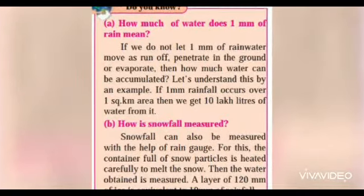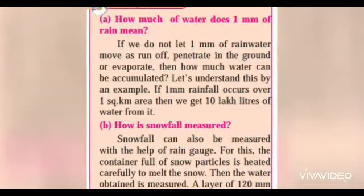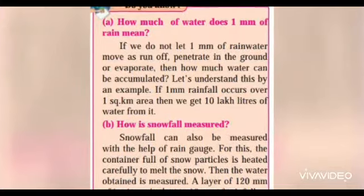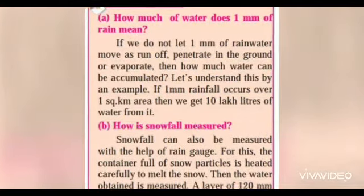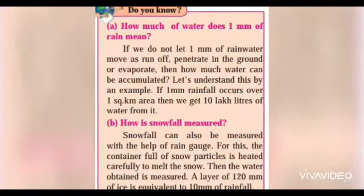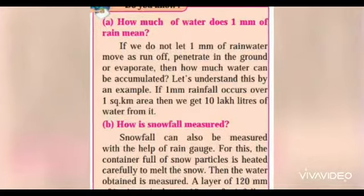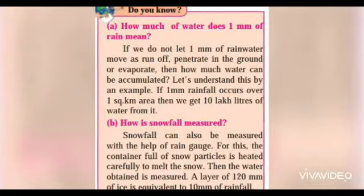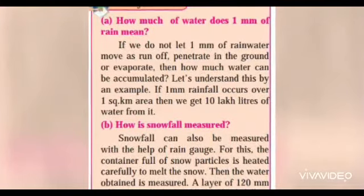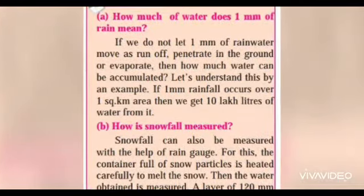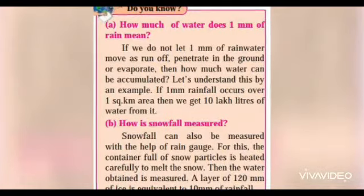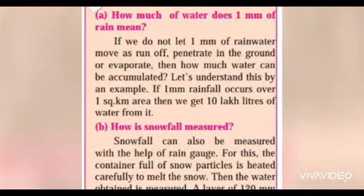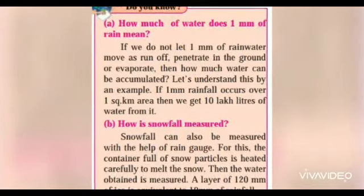How is snowfall measured? Snowfall can also be measured with the help of a rain gauge. The container full of snow particles is heated carefully to melt the snow, and then the water obtained is measured. A layer of 120 millimeters of ice is equivalent to 10 millimeters of rainfall.